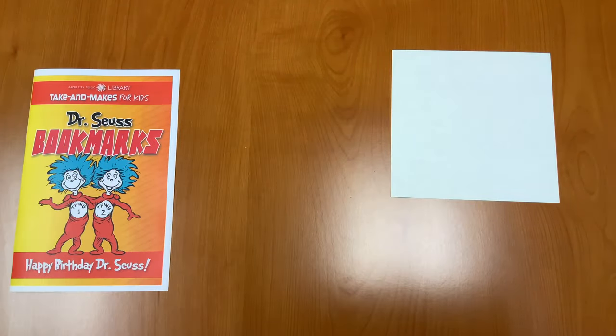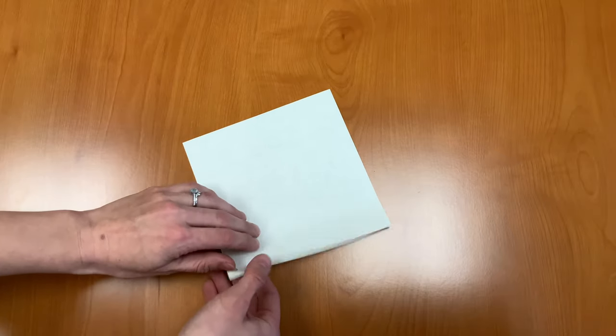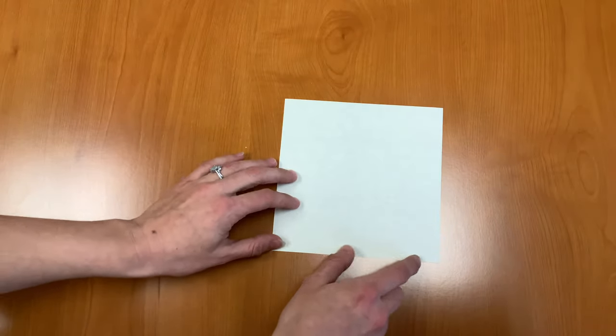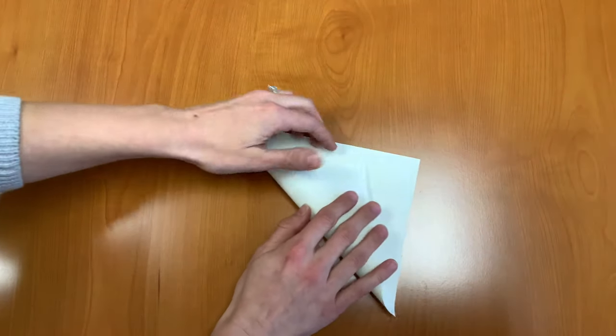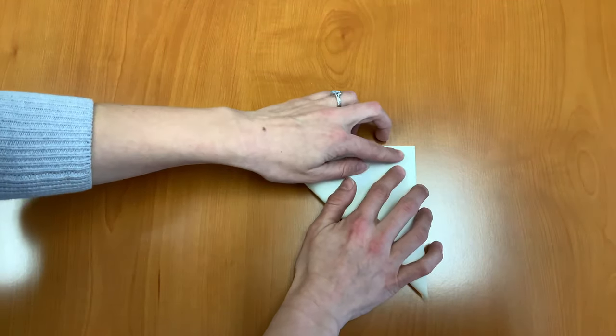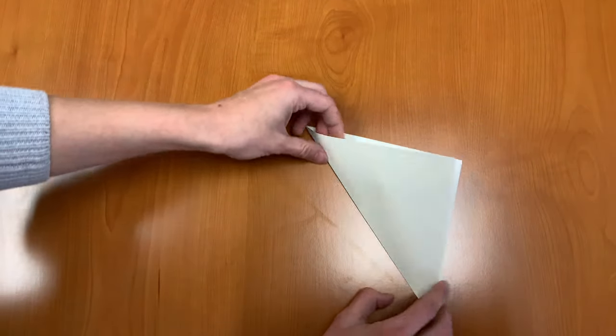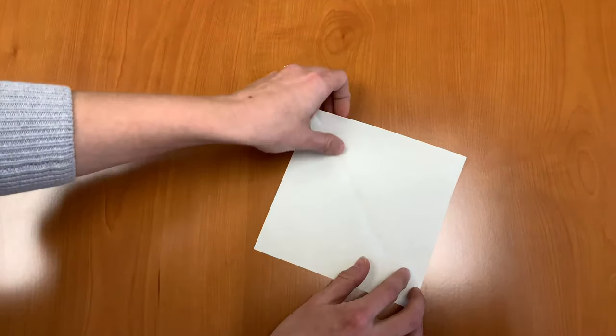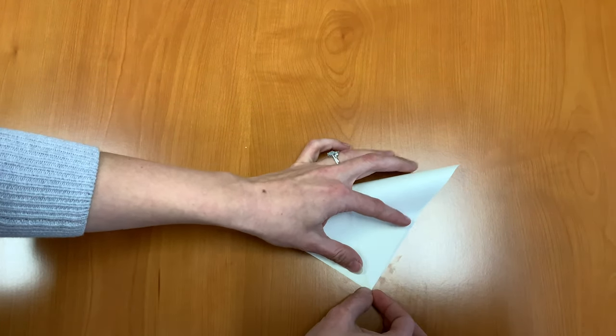We're going to take away everything except for the white piece of paper and start with that. First, we're going to fold your bookmark. What we want to do is fold our white paper square diagonally both ways. So I'm going to fold from corner to corner one way, unfold it, and then fold from corner to corner the other way as well.